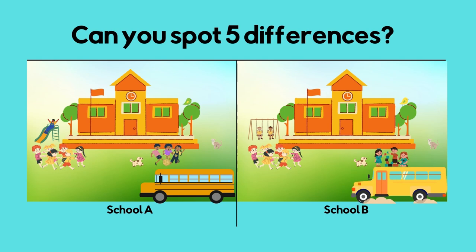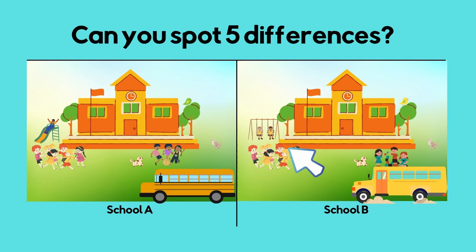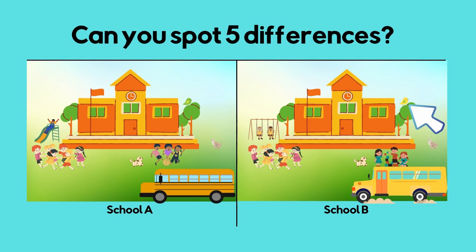The school bus is different. In School A, they are playing soccer or football. In School B, they are playing with blocks. In School A, there is a slide. In School B, there are swings. In School A, the bird is green with a little bit of yellow. In School B, the bird is yellow with a little bit of green. The door is different.